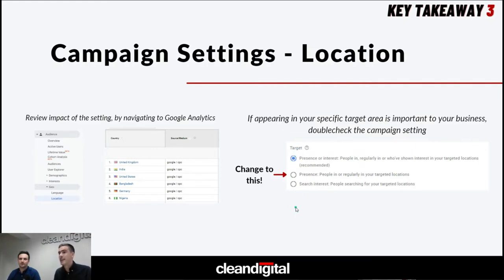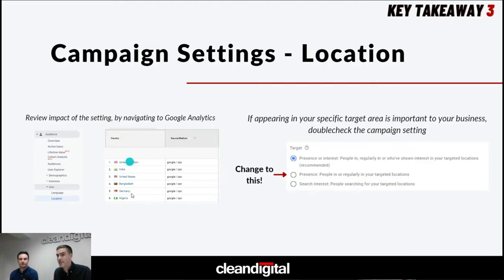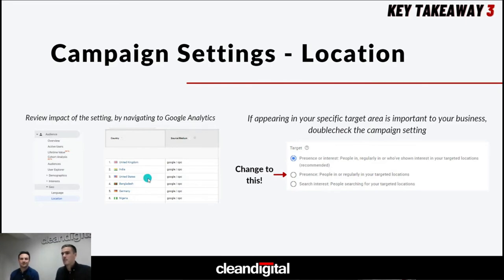The first thing to check in the account is campaign settings. If you see the blue tick on 'presence or interest,' you might want to change it to just 'presence,' which will show only to people in or regularly in your target locations. You can also do an impact analysis — go to Google Analytics, split by audience geo-location and country, then pull in the source medium of Google CPC if you've got auto-tagging. In this example, 10% of clicks came from India, 5% US, 5% Bangladesh. Making that change made the traffic perform a lot better.